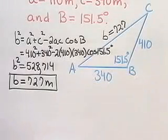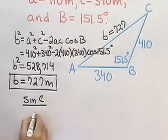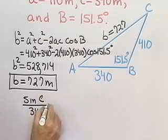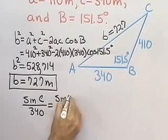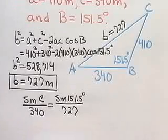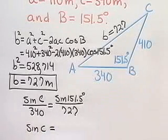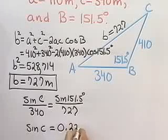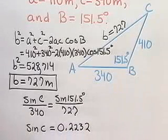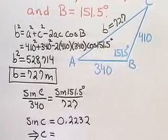Using the law of sines, I'm going to have sine C, which is what I'm looking for, is to side C, 340, as the sine of 151.5 degrees is to 727. I set up my law of sines that way, solve for sine C. I put this on the calculator and get approximately 0.2232. Using my inverse sine button on the calculator, that tells me that angle C must be equal to 12.9 degrees.